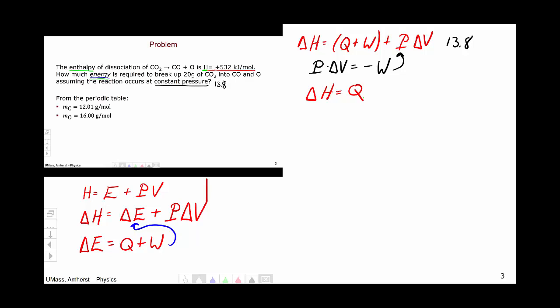Now that we've refreshed ourselves on the connection between enthalpy and something that's more in line with energy, this idea of heat, we're now in a position to start solving the problem. So what's provided in the problem is that the change in enthalpy of this reaction is plus 532 kilojoules per mole. From this connection between enthalpy and heat, which is only true at constant pressure, we know that the heat is 532 kilojoules per mole as well.